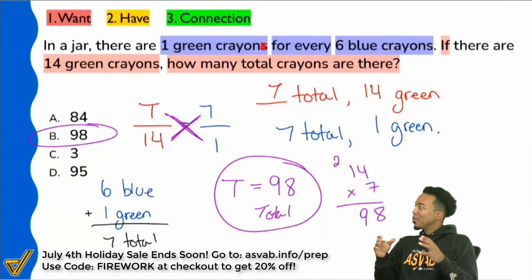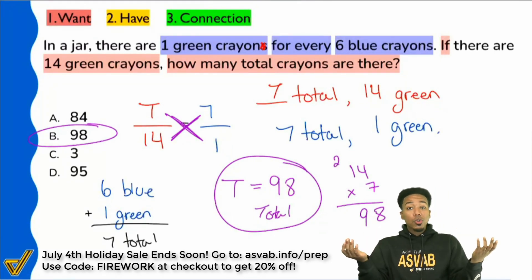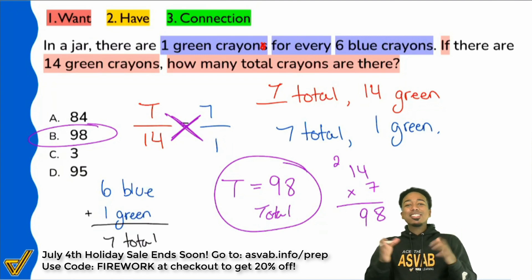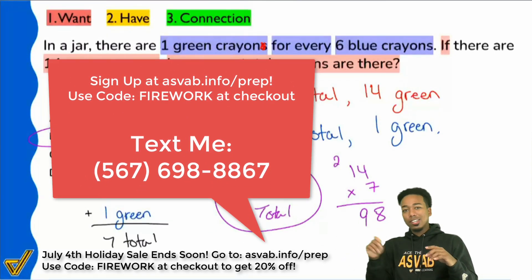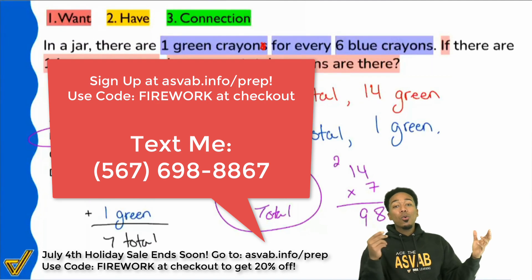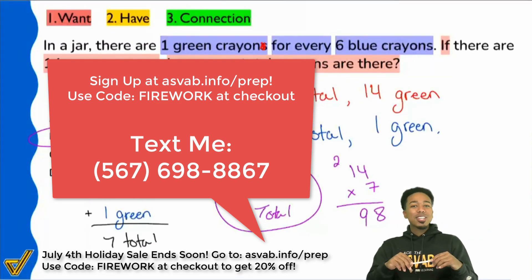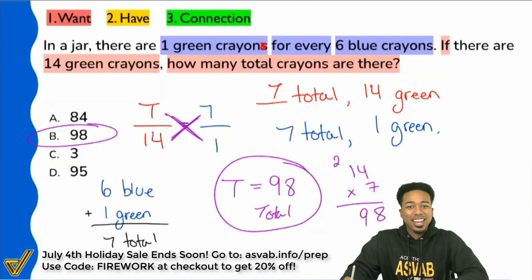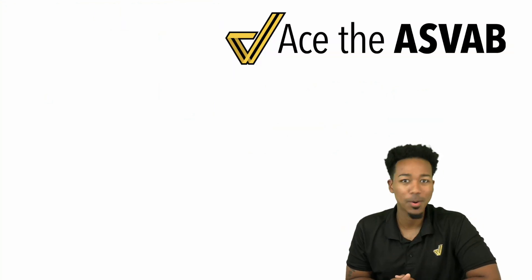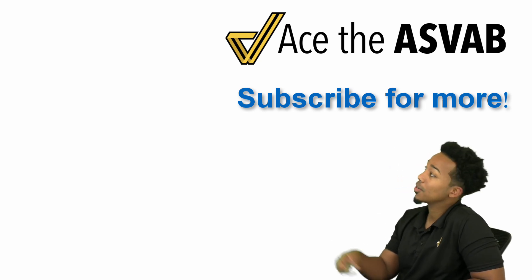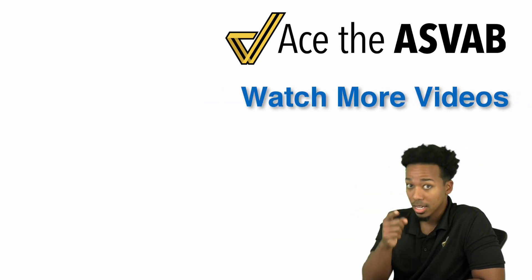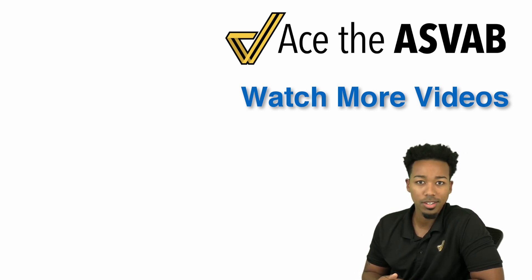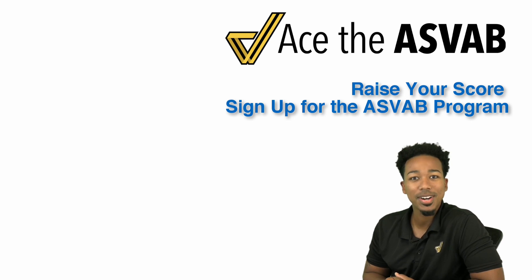So practicing proportions, systems of equations, solving regular equations, geometry — all of it is set up for you in the program. If you want to raise your score and get the job you want, shoot me a text at 567-698-867, or go to duranlearning.com to sign up, save big, and get that job you want. I love you guys, can't wait to keep helping you raise your score, and I'll see you next time. Thanks for watching — subscribe with that button, check out a similar video up there, and if you want the program to raise your score the right way with my support every step of the way, click that link at the bottom left.